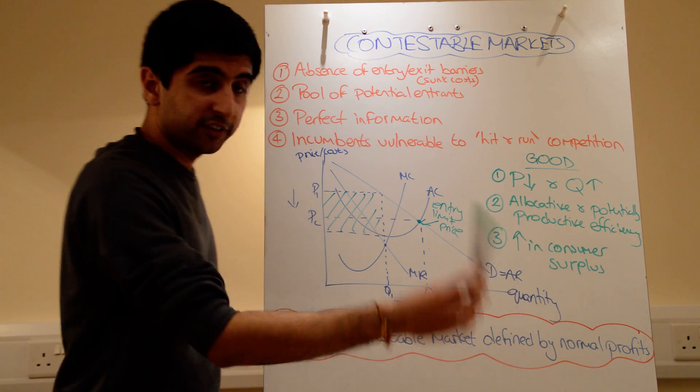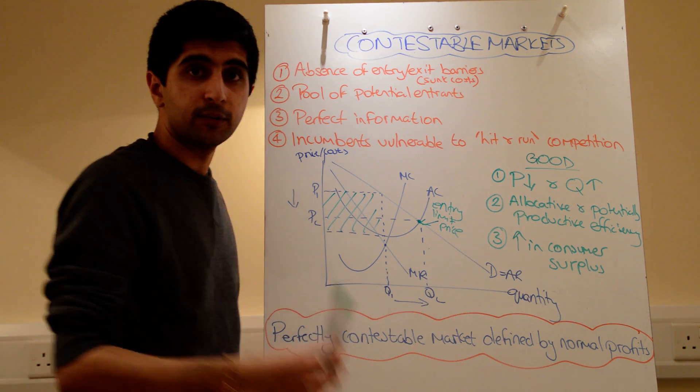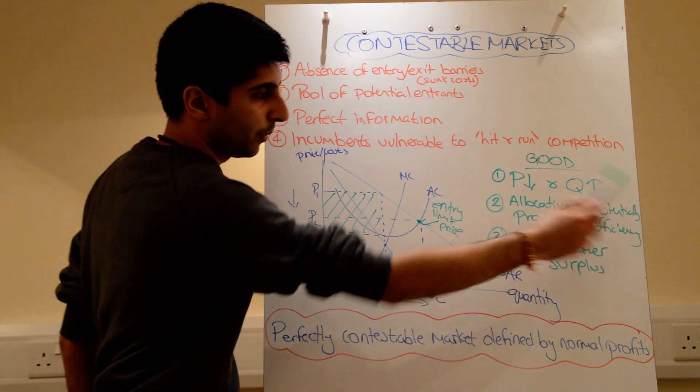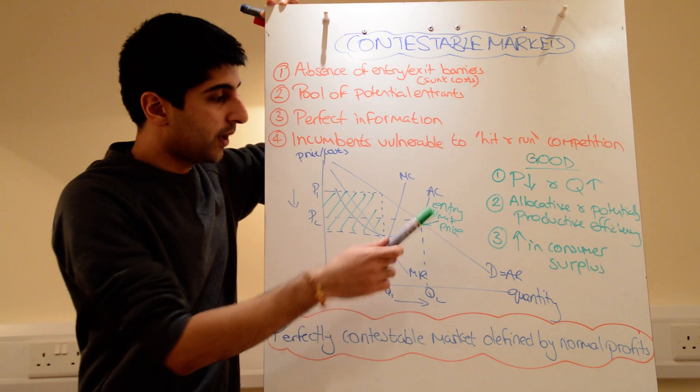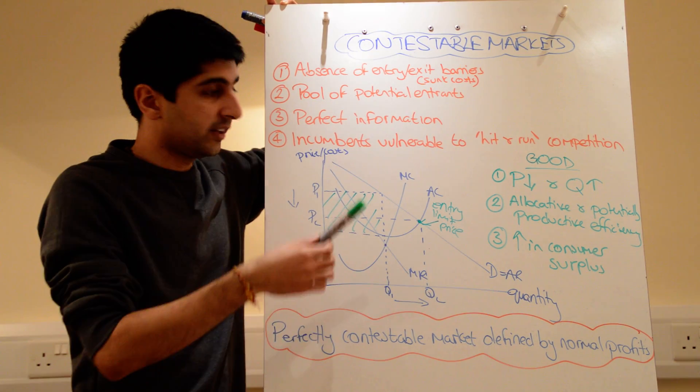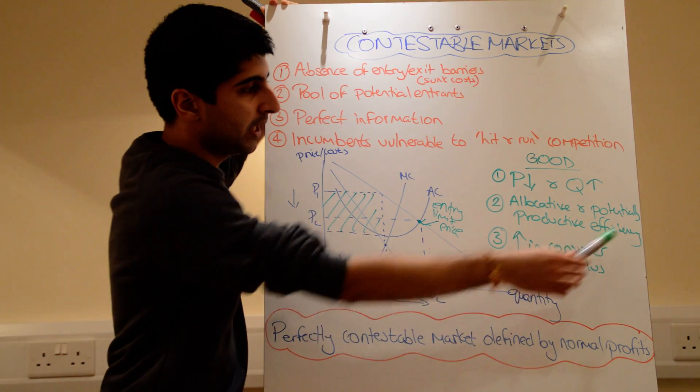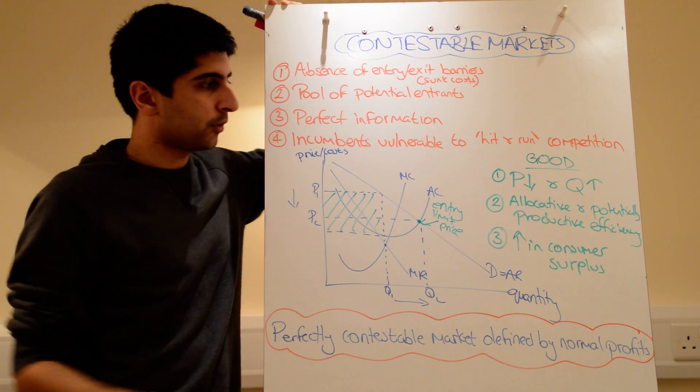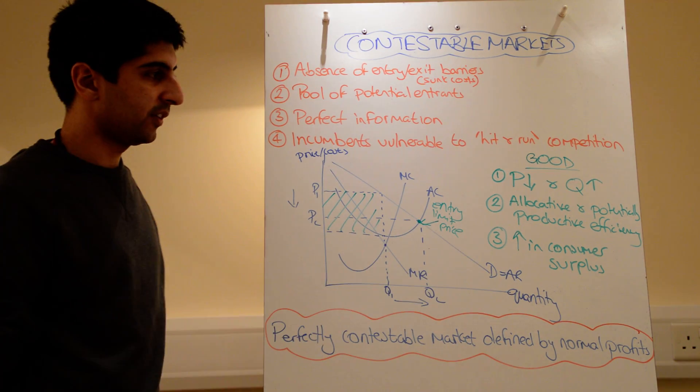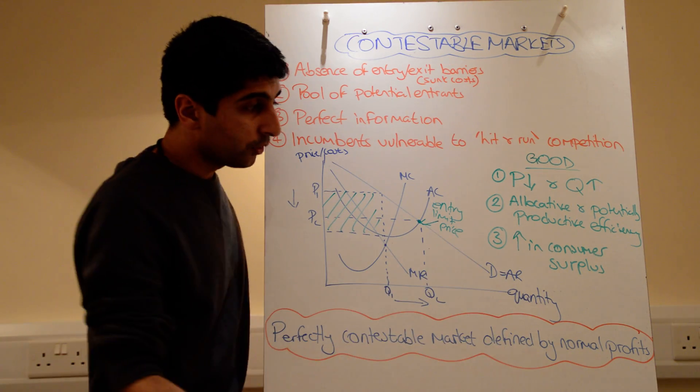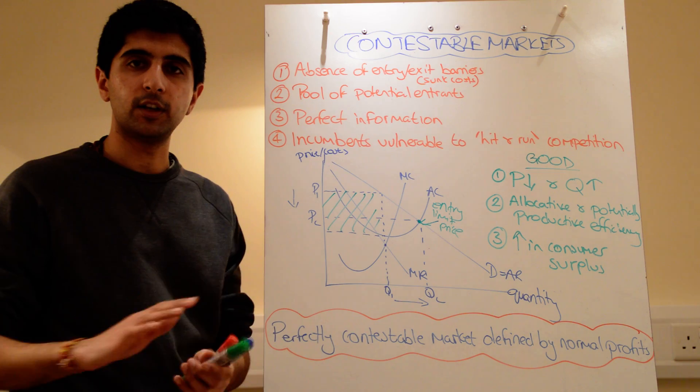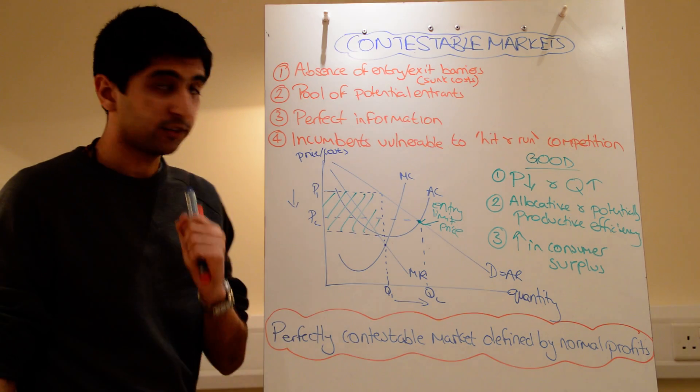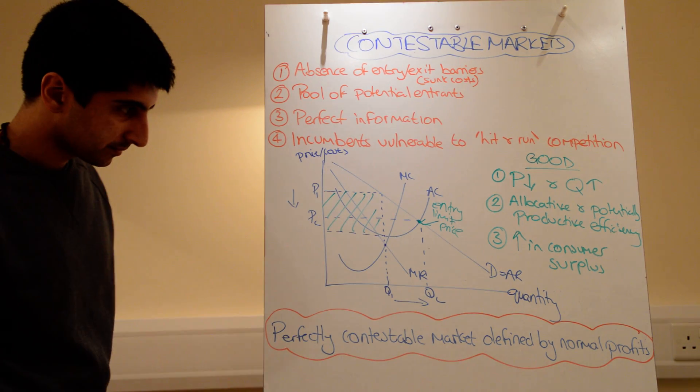Potentially productive efficiency, but certainly allocative efficiency is more likely in contestable markets, which is great. These two tend to have to be maintained if firms want to be competitive, if firms want to negate the threat. They have to be as efficient as possible. So you tend to see allocative and productive efficiency too. Why is it also good? Well, there's going to be rising consumer surplus. Like I said, consumer exploitation isn't going to be as great. So contestable markets really are a great thing.